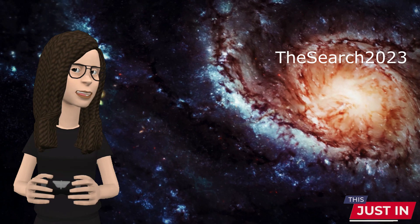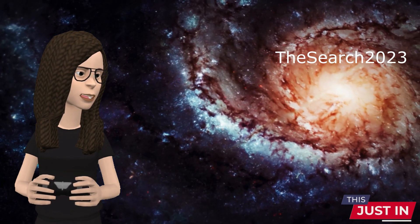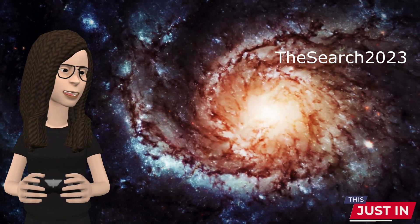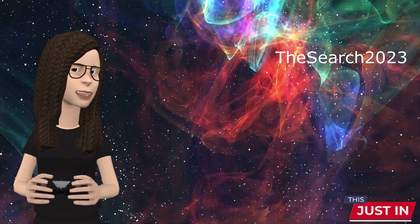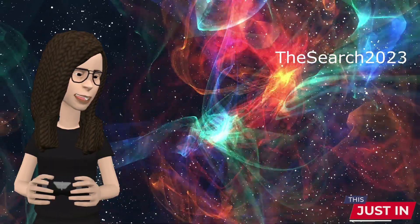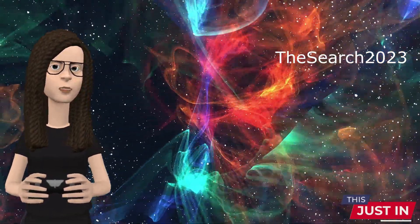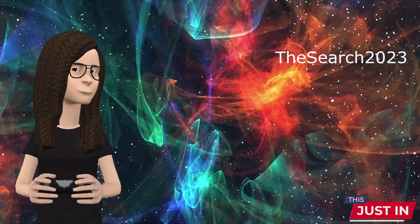M31, the Andromeda galaxy, is the closest spiral galaxy to the Milky Way and the largest in the local group of galaxies. Painstaking measurements of its motion show that it will collide with the Milky Way about 4 billion years from now. So you don't need to worry about it now.